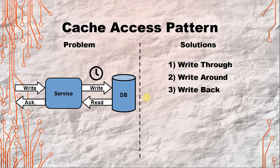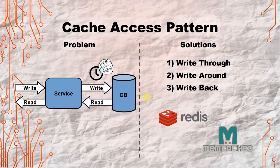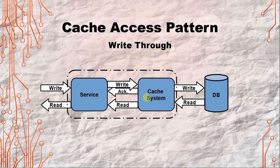The next problem: every time you write and read to a database from your service it takes time. Sometimes what you want to do is pre-serve the information that is most frequently requested, so you reduce the time spent reading from the database. We have three solutions: write-through, write-around, and write-back. These are the cache access patterns that are mostly used. Two popular options are Redis and Memcache.